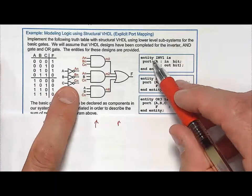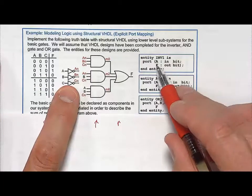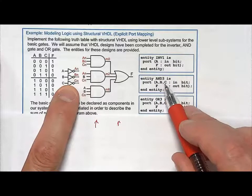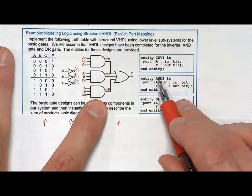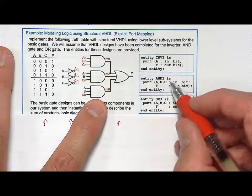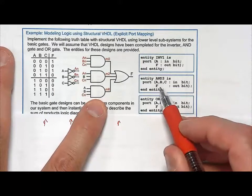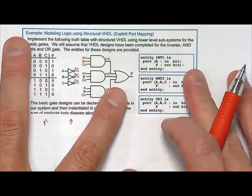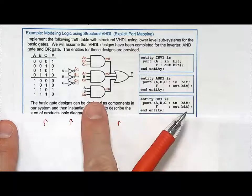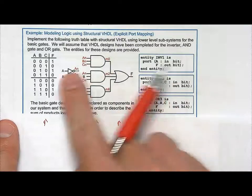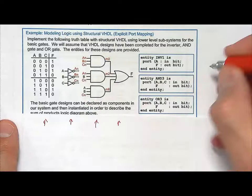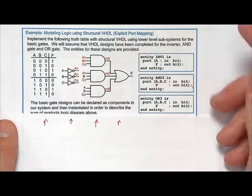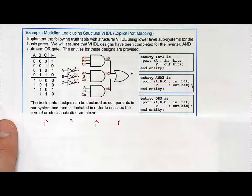we had an inverter, which was called INV1, and it's got the port definition of A, and F are its ports. Then you have AND3, the three representing that it's got a fan-in of three, and then you have ABC and F are its declaration, or its ports, and then we have an OR3, so ABC and F again. And let's instantiate these into a higher-level file in order to create this functionality. Now, we're assuming that the inverter actually does the inversion. This is a three-input AND operation, and this is the three-input OR operation, and we can just make that assumption.